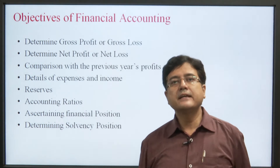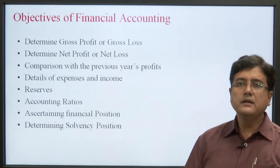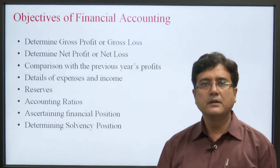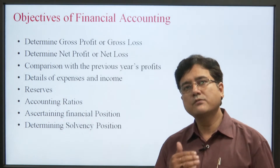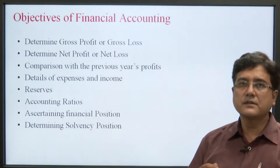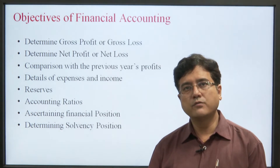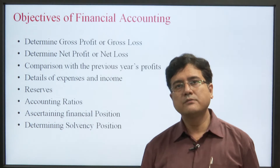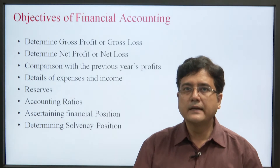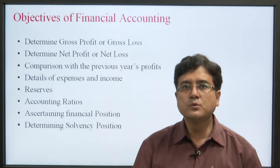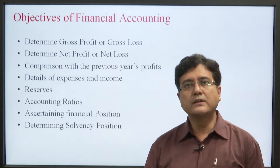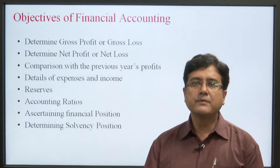The next objective is detail of expenses and income. With the help of financial accounting, we have a detailed list of all expenses and income incurred in business transactions over the period of time. Another objective is reserves — reserves are accounts that companies prepare to set aside extra profit and keep it for use in future transactions or capital expenditures. With the help of financial accounting, we can prepare reserves to help in future transactions.